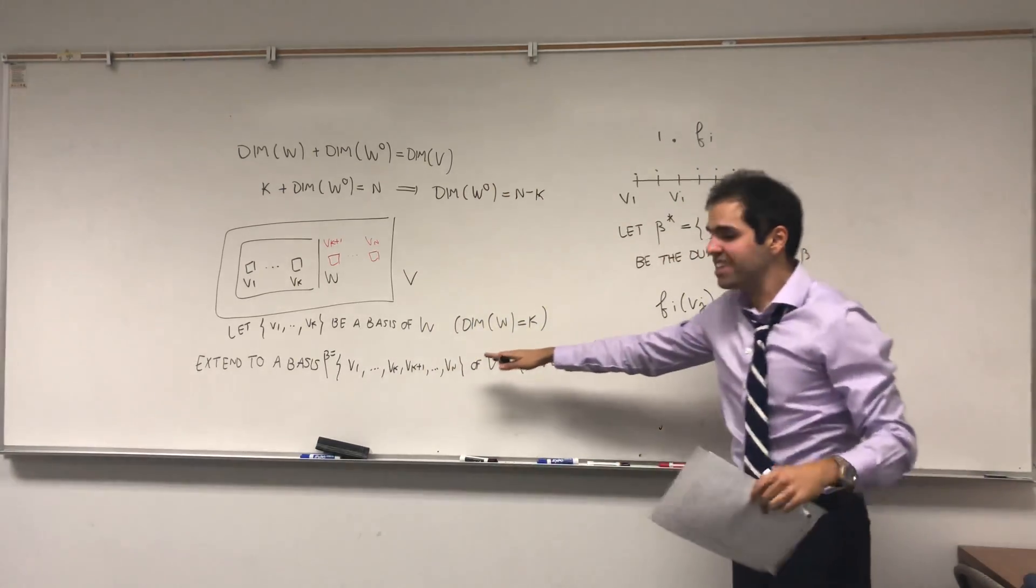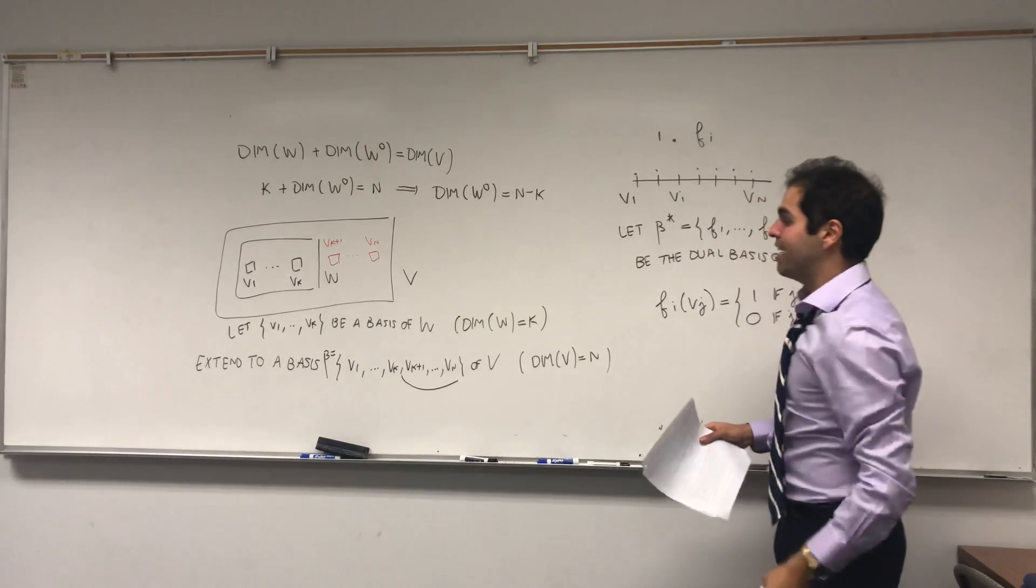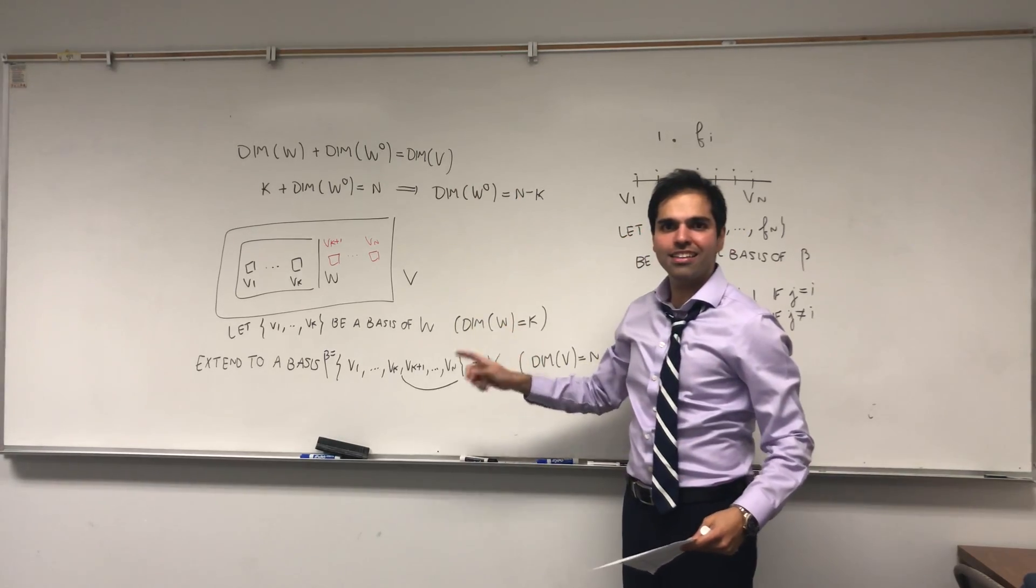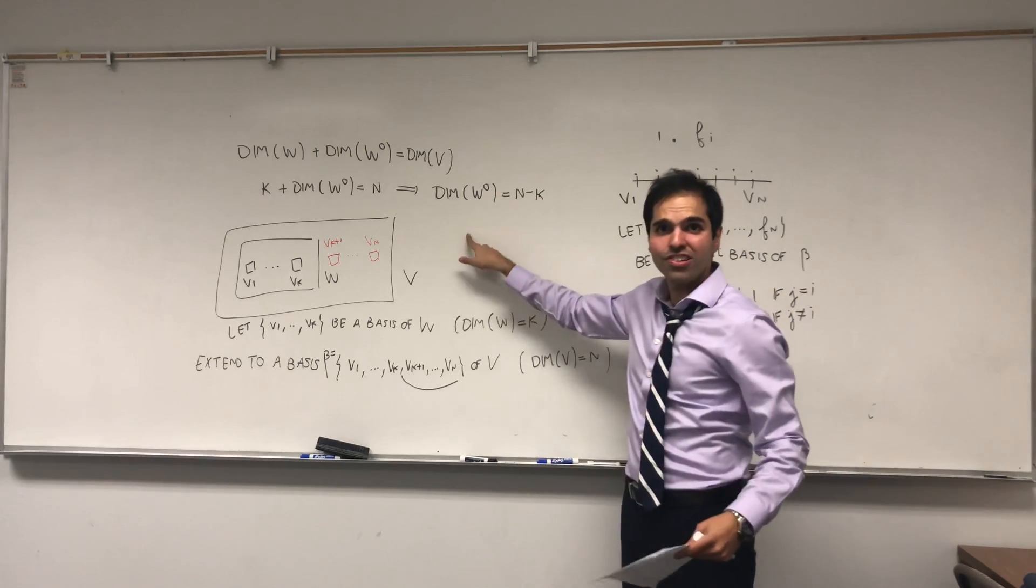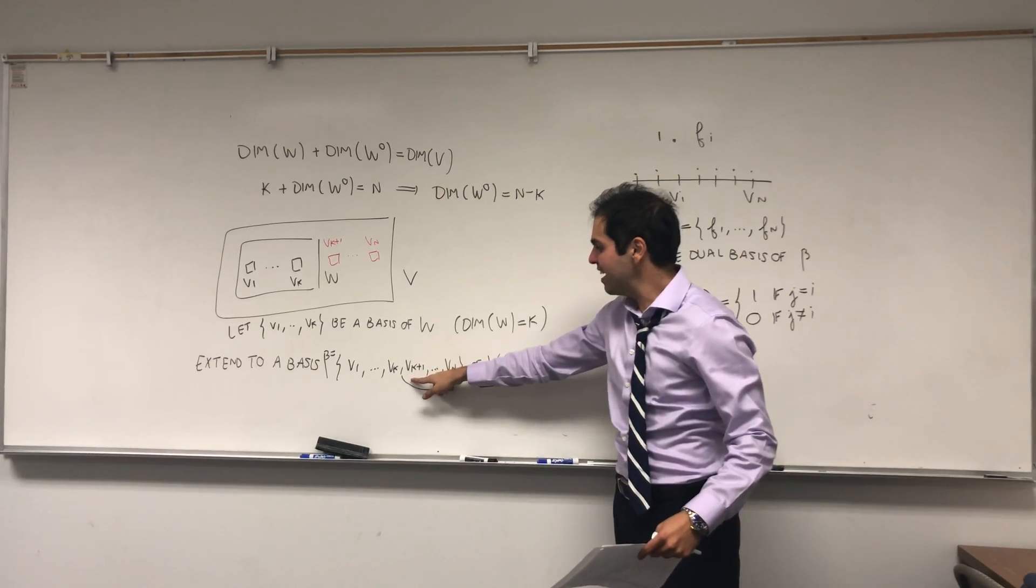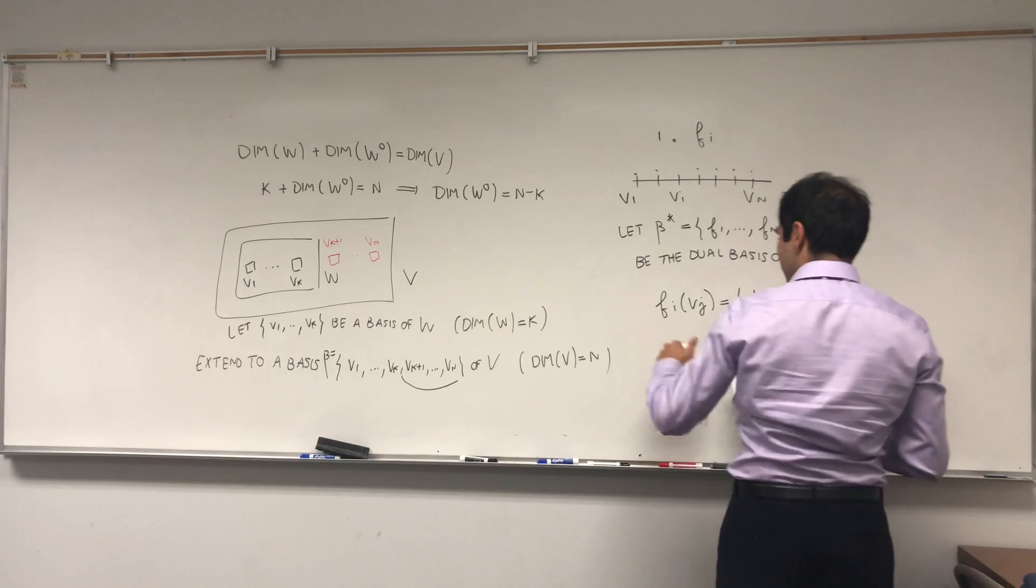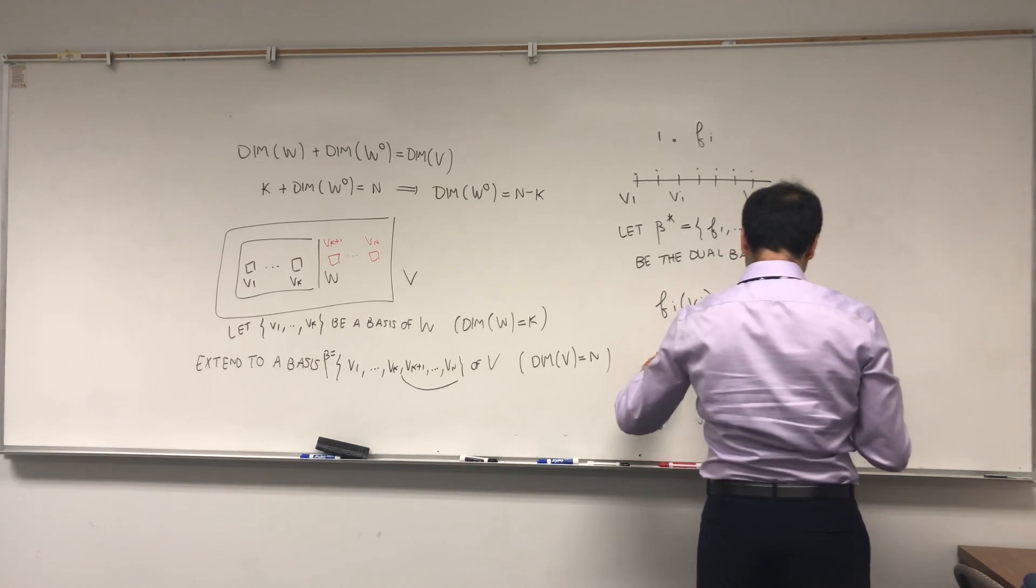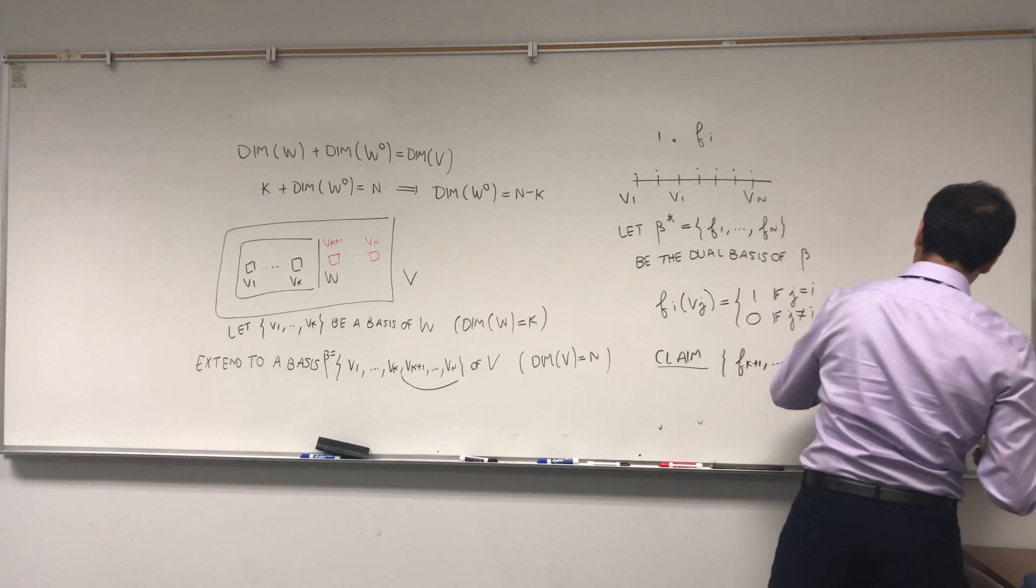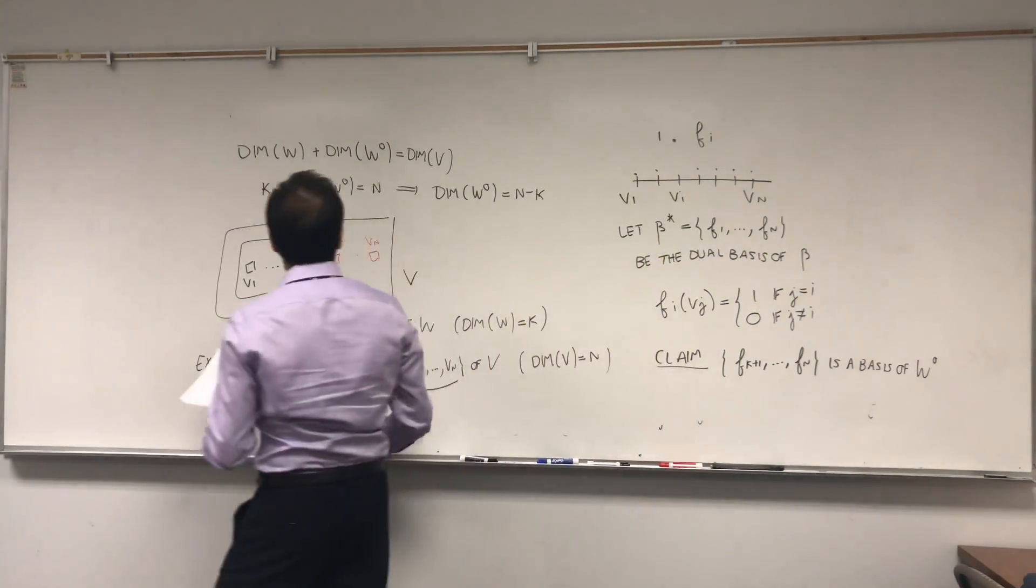But we just said the dimension of W is k plus the dimension of W naught equals to the dimension of V, which is n. So ideally we want to show that the dimension of W naught is n minus k. But notice in this set we precisely have an interesting subset of n minus k vectors, namely this. And ideally we would like to say vk plus one up to vn is a basis of W naught. But that doesn't really make sense because we need functionals. We need elements in V star to have a basis of something. And in fact, I'm claiming that the functionals Fk plus one up to Fn is a basis for W naught.